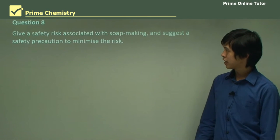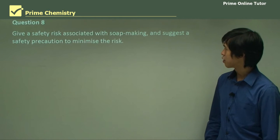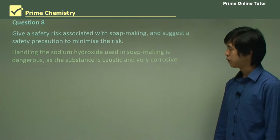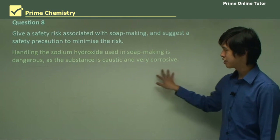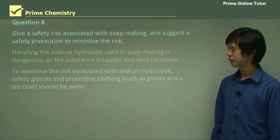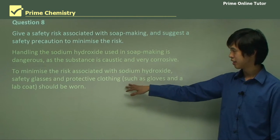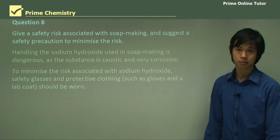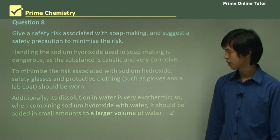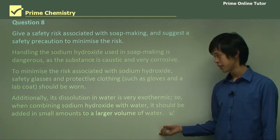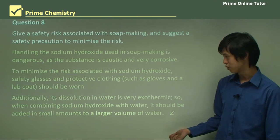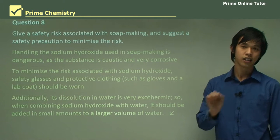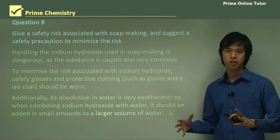Give a safety risk associated with soap making and suggest a precaution to minimise the risk. Handling sodium hydroxide is dangerous, as it is caustic and very corrosive. To minimise risk, safety goggles, protective clothing such as gloves, and lab coats should be worn at all times. Additionally, its dissolution in water is very exothermic, so when combining sodium hydroxide with water, it should be added in small amounts to large volumes of water — similar to sulfuric acid.